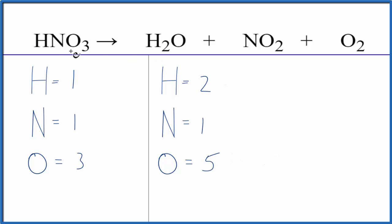It looks like we could just start out by trying to balance the hydrogens. We could put a two in front of the HNO3, so one times two, two hydrogens, one times two, two nitrogens, and then three times two, that's six of these oxygen atoms.